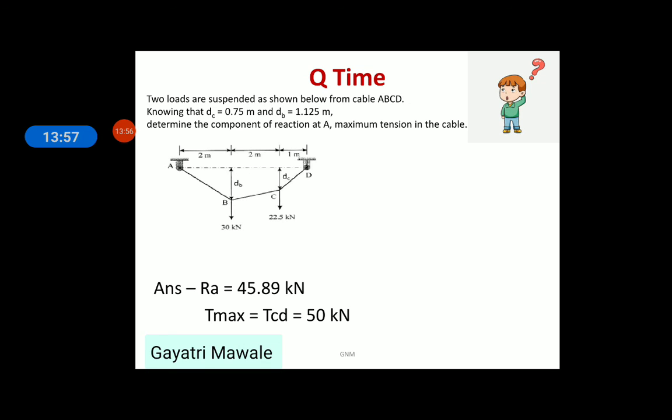This is one homework problem for you. Two loads are suspended as shown in figure below of cable ABCD. Knowing that vertical distance DC is 0.75 meter and vertical distance DB is 1.125 meter, determine the component of reaction at A. Maximum tension in the cable. Answers are given for your reference. You try a detailed solution and match your answers with the given.